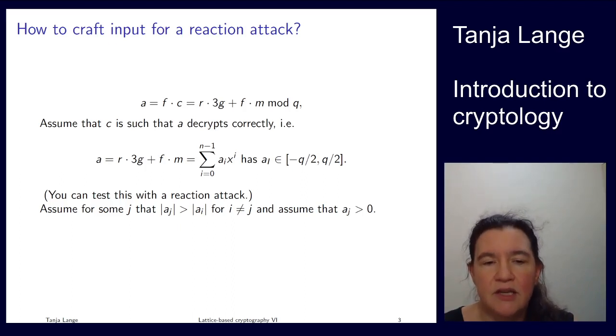Now there comes an assumption and this assumption may or may not be satisfied with the ciphertext and we can't see that from the outside. But let's assume for the moment, let's assume that there's one single coefficient a_j which is larger than all the other a_i's, say in absolute value.